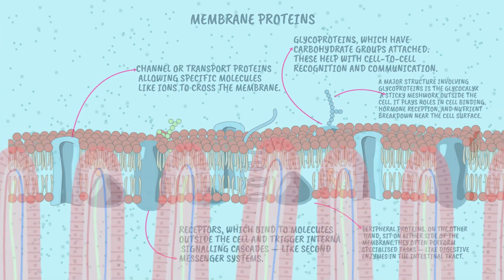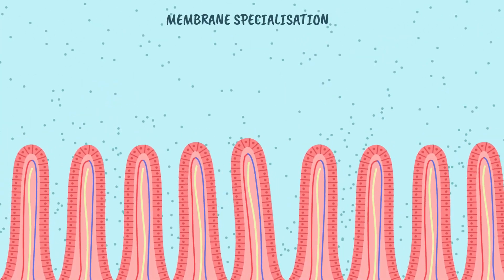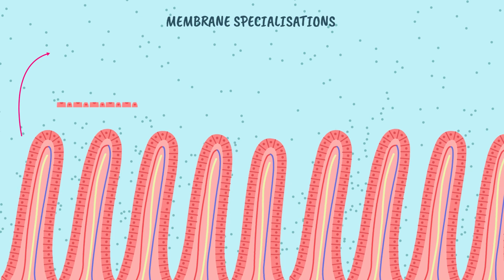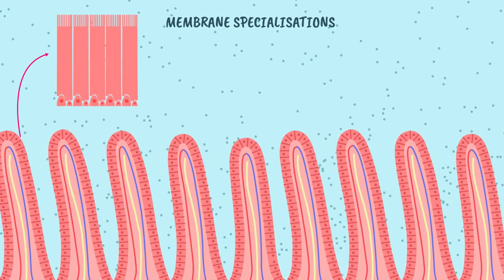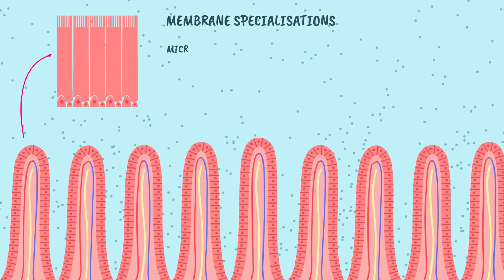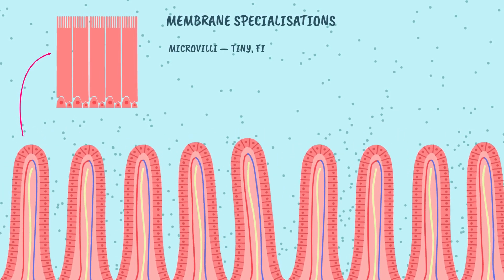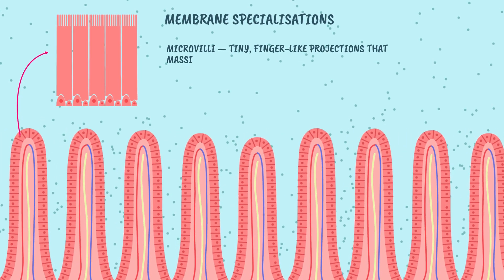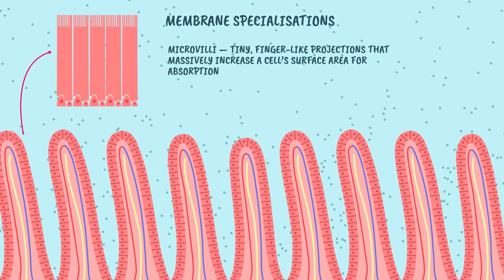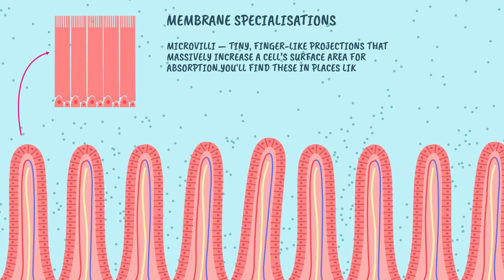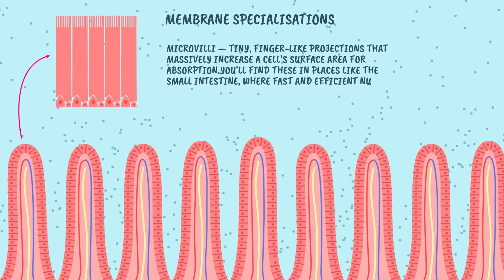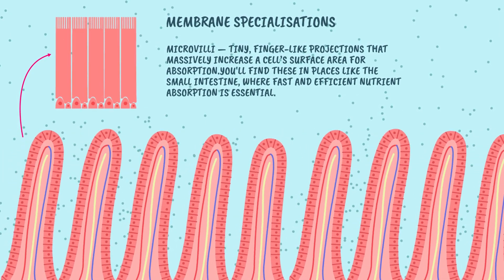As we wrap up, let's quickly talk about membrane specializations. Sometimes the plasma membrane is modified to perform even more specific tasks. One example is microvilli — tiny finger-like projections that massively increase a cell's surface area for absorption. You'll find these in places like the small intestine, where fast and efficient nutrient absorption is essential.